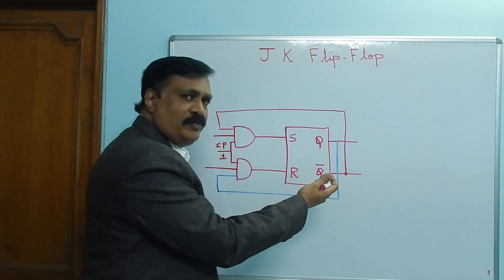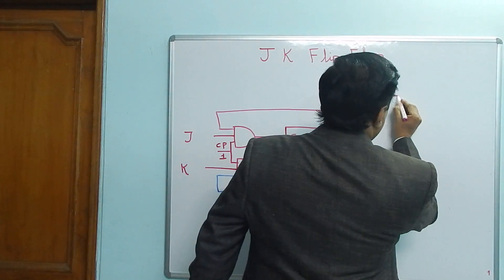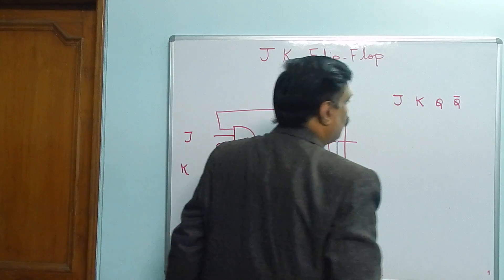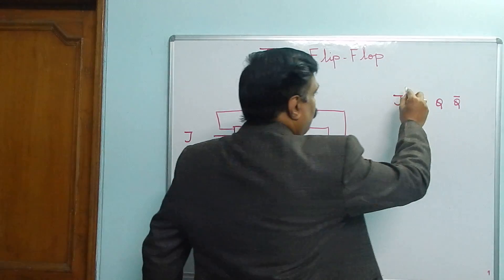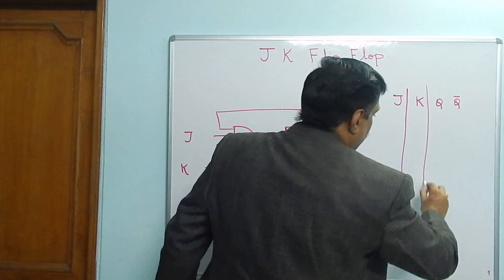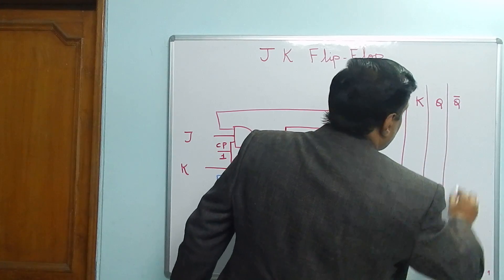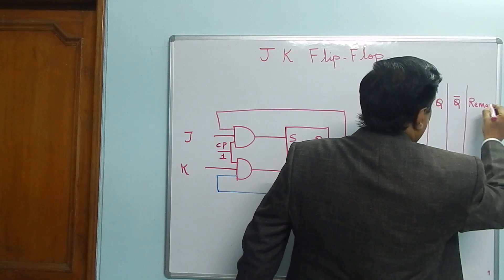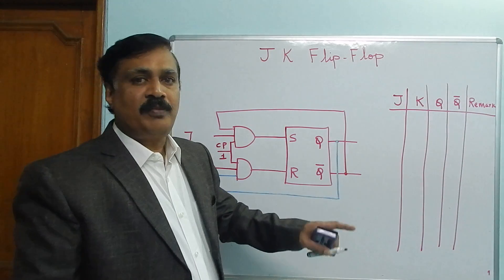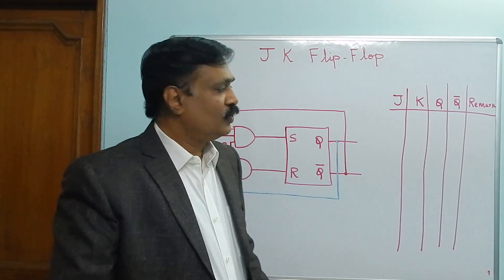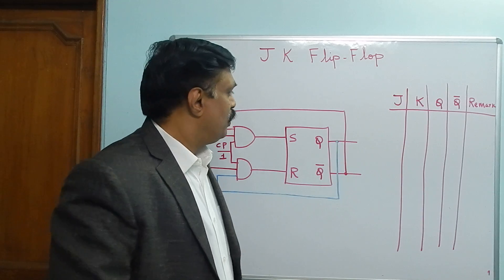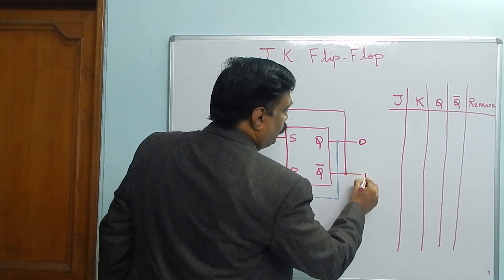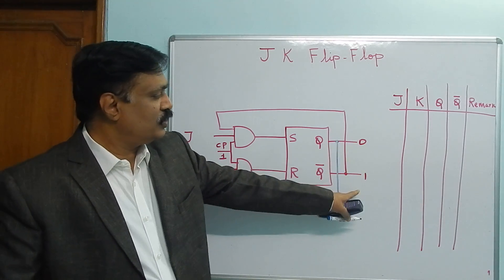Now I will prepare the truth table for JK flip-flop with columns: J, K, Q, Q-bar, and Remark. In SR flip-flop I had not included Q-bar, but here I have included Q-bar — I will explain why. Initially let us assume Q equal to 0 and Q-bar equal to 1.